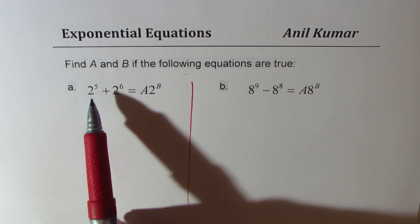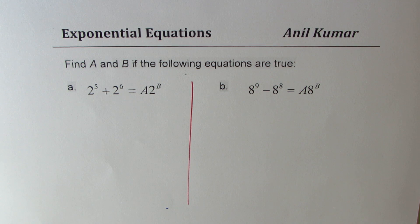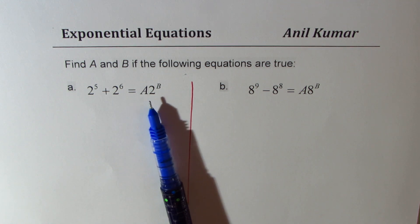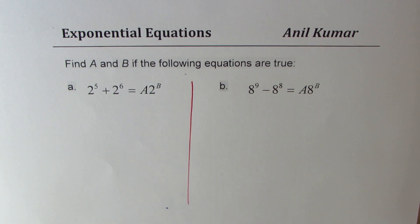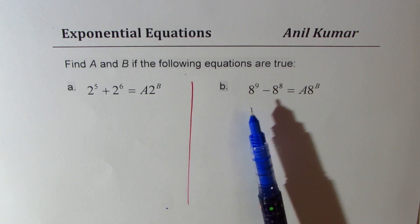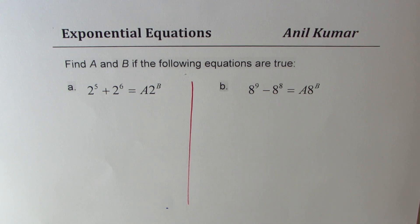First: 2^5 + 2^6 = A × 2^B. You need to find what is A and what is B. The second equation is 8^9 - 8^8 = A × 8^B. You need to find what A and B are.